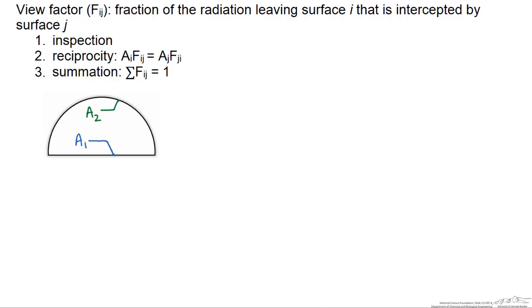It's easy to see that F one one equals zero, because A1 cannot see itself and therefore cannot intercept any radiation.